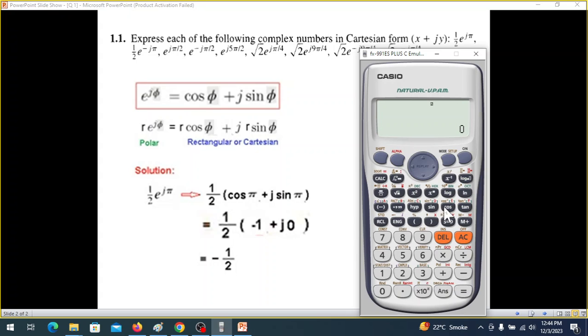And now cos π. This is cos. π is here. So we'll press shift, π, bracket, close, equal sign, so minus 1. So this is cos π can be written as minus 1.